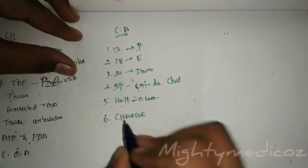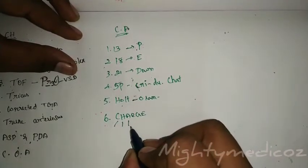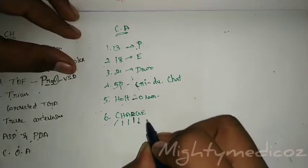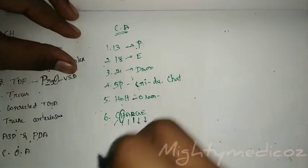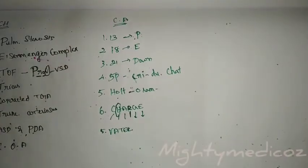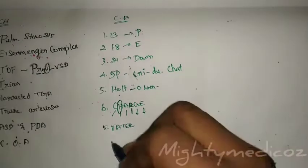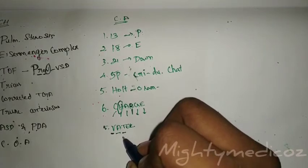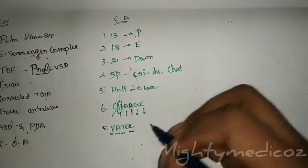In CHARGE syndrome: C is coloboma, H is heart defect, A is choanal atresia, R is growth retardation, G is genital abnormalities, E is ear abnormalities — the H stands for heart defects. In VATER syndrome: V refers to vertebral anomalies, A refers to anal atresia, TE refers to tracheoesophageal fistula, and R refers to renal abnormalities. In these syndromes there will be heart defects.